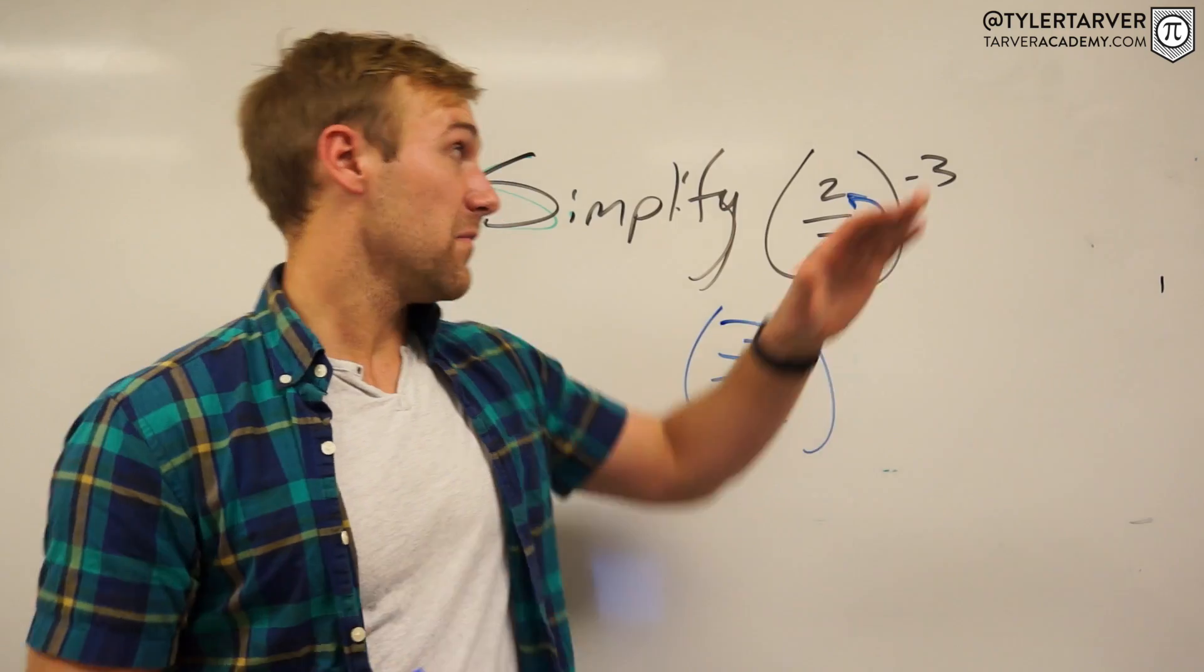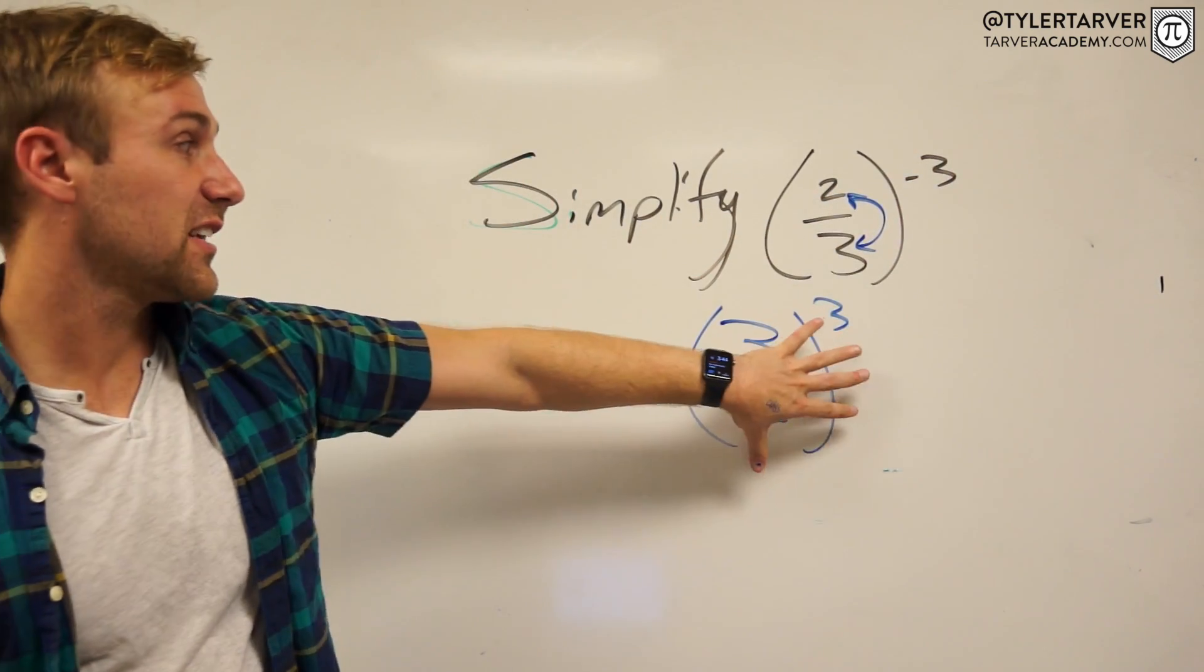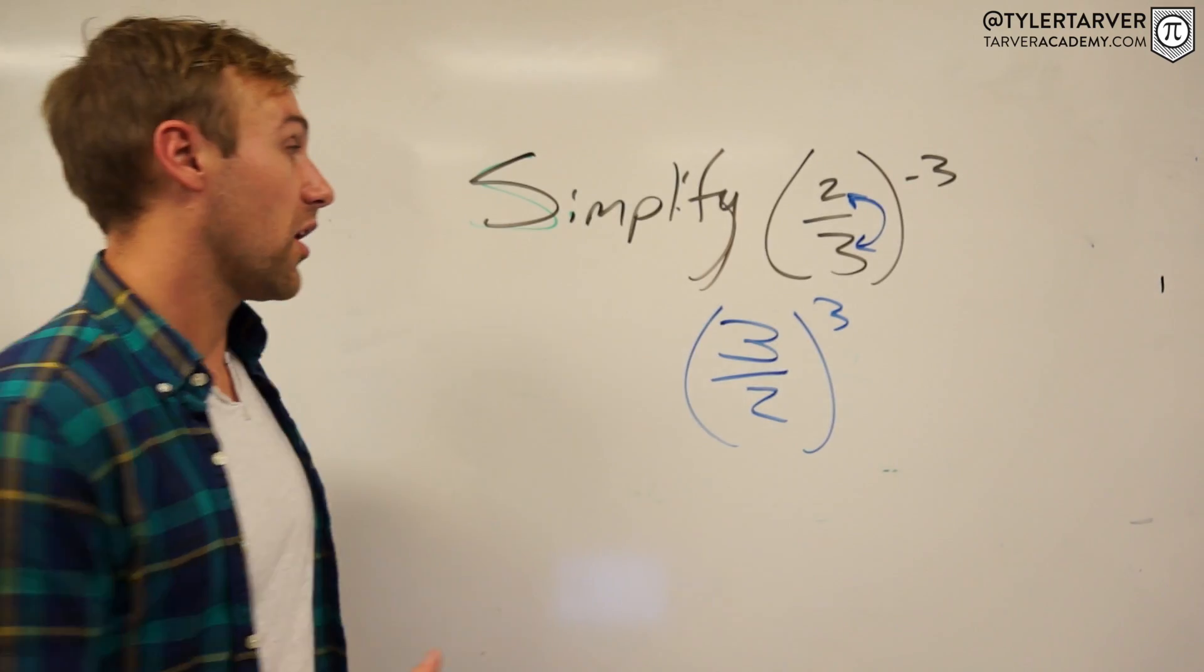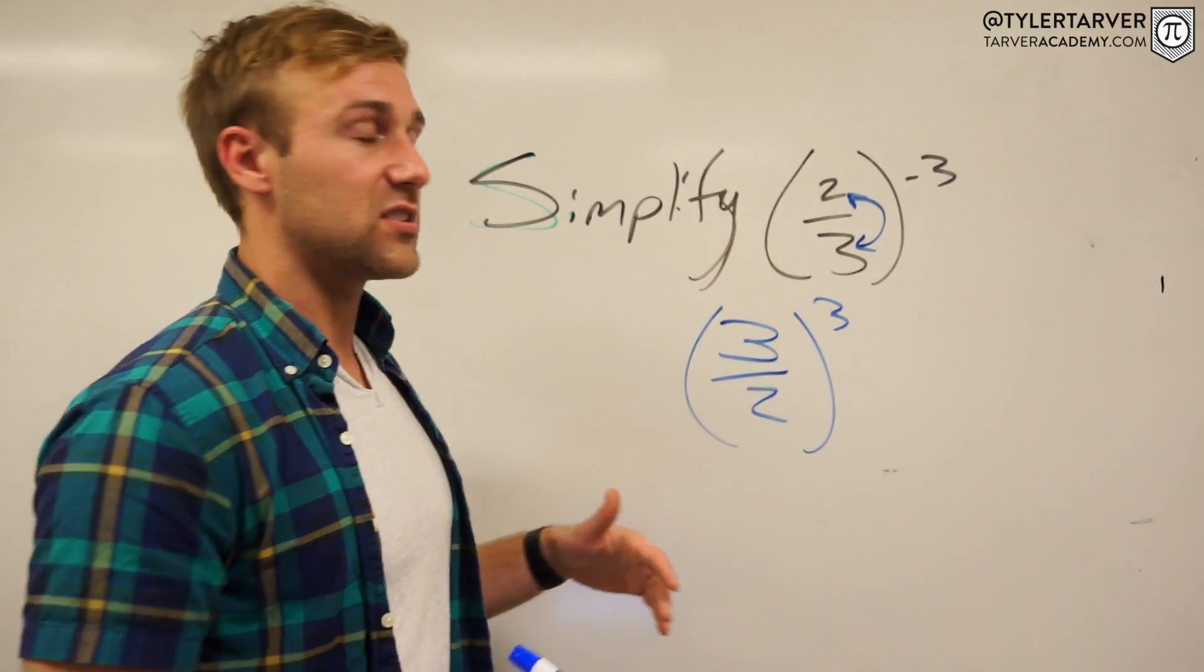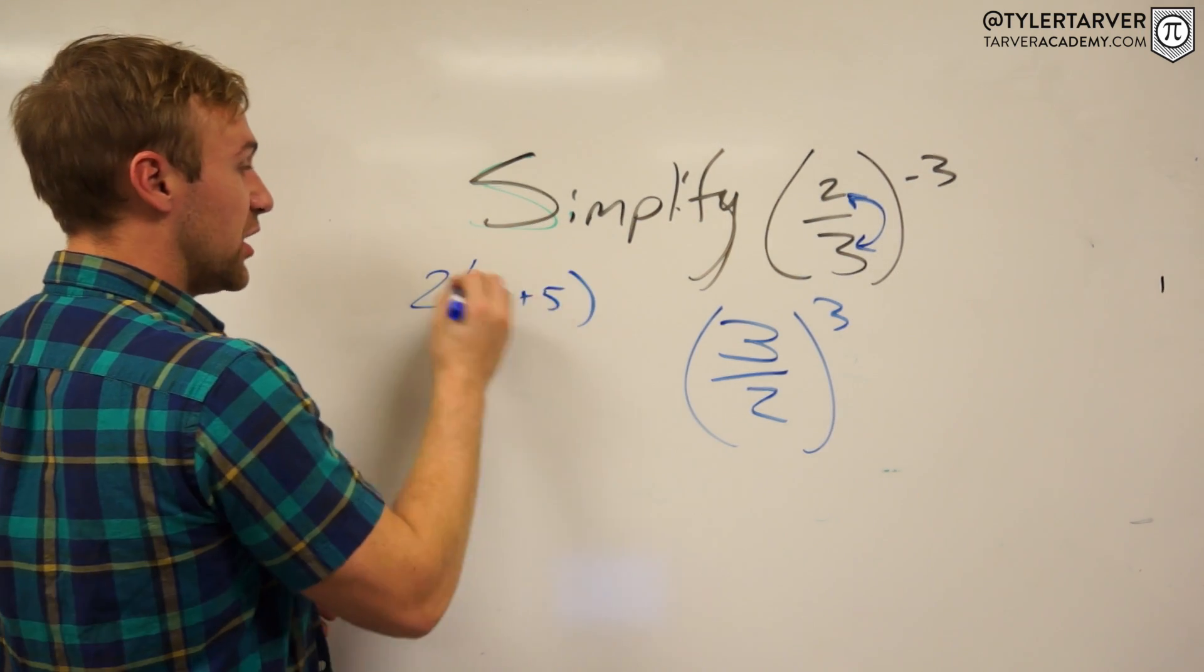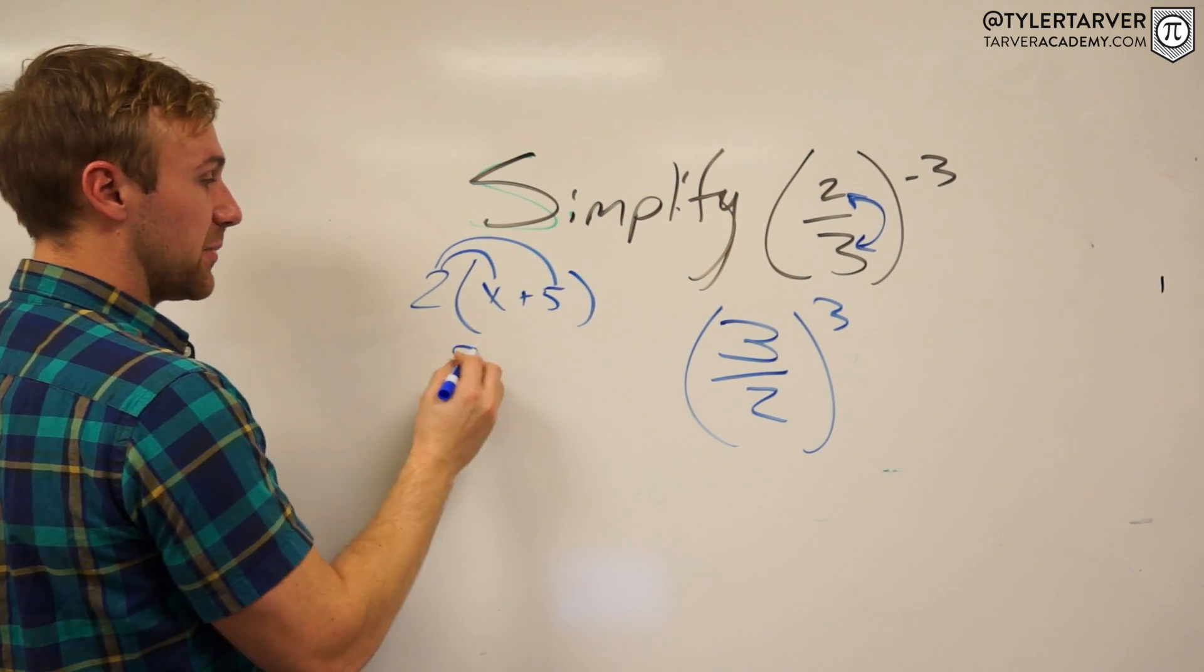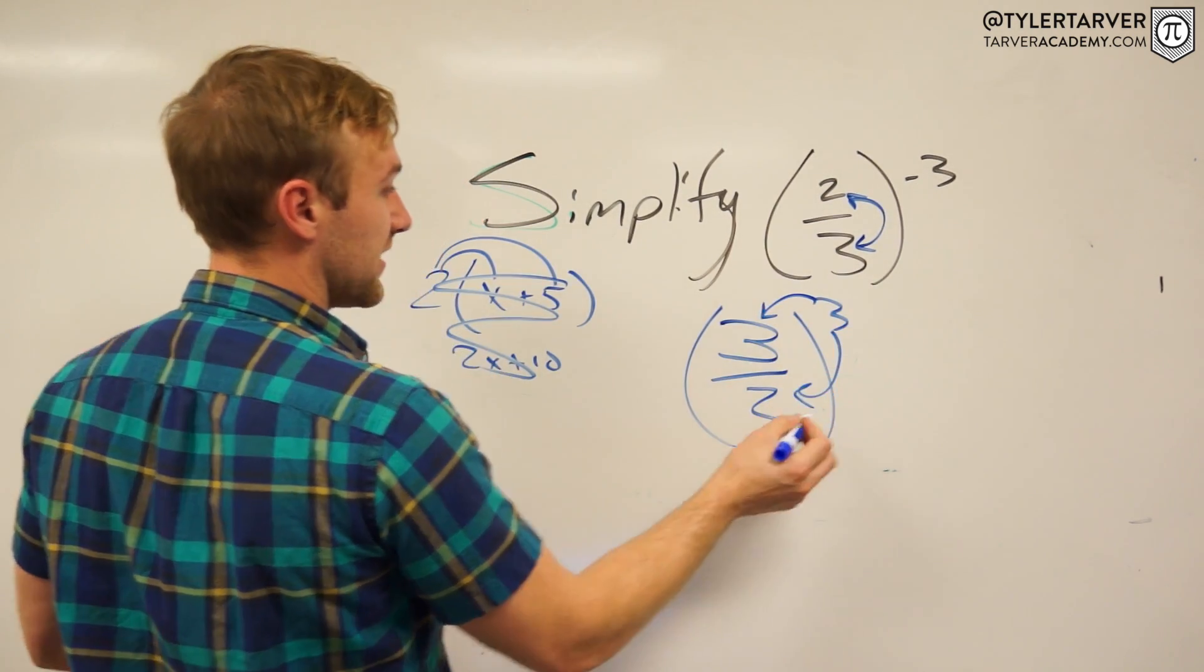Now, this is where you may have missed that step. If you did, sorry. But also, this is the other big thing you need to know. You need to distribute that 3 to both parts of your problem. Just like if you had 2(x + 5), you would distribute the 2 to both of these, and it would be 2x plus 10. You got to distribute this 3 to both of these.